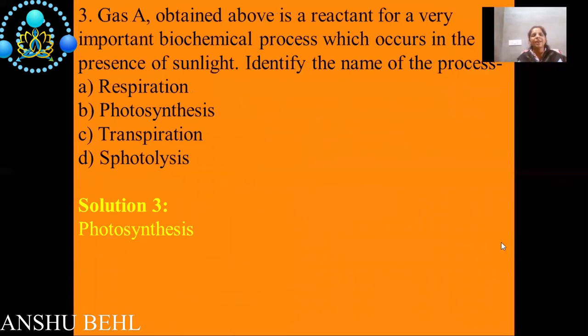Third question: Gas A - gas A means we are talking about carbon dioxide gas. Carbon dioxide gas which is coming out from the above reaction is used in a biochemical process which occurs in presence of sunlight. The process, biochemical process which occurs in presence of sunlight is photosynthesis.